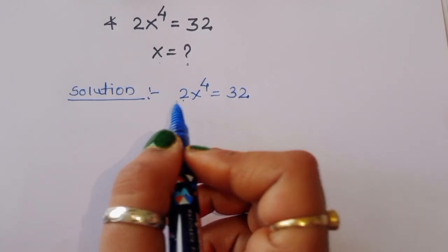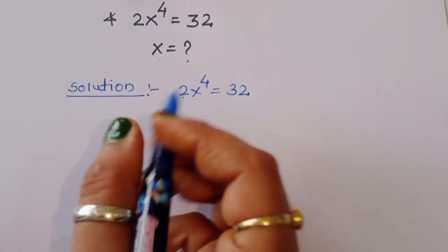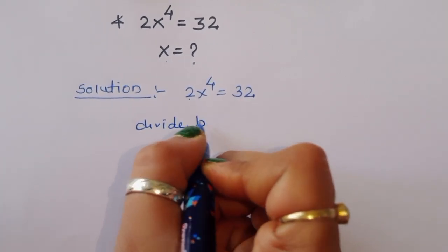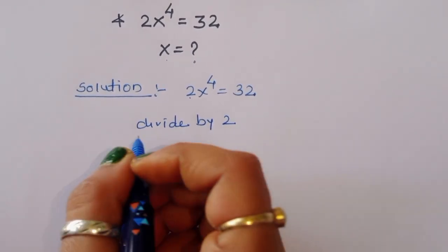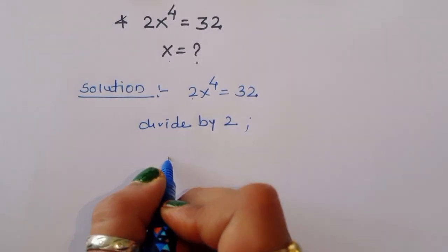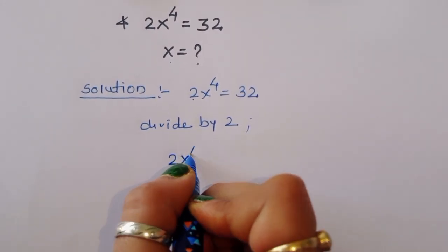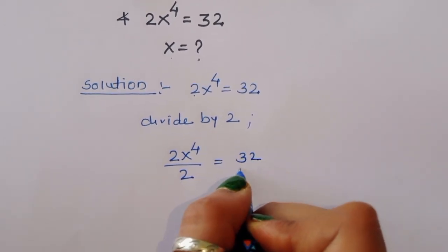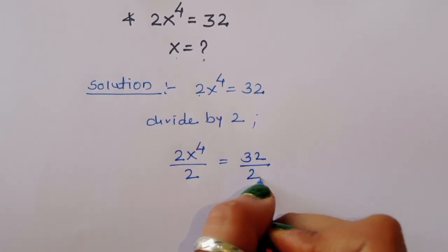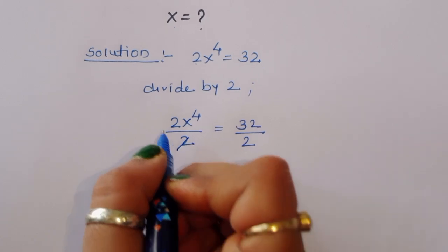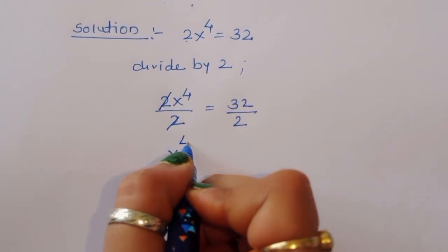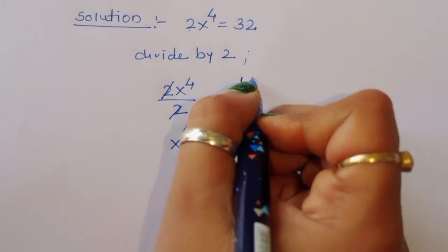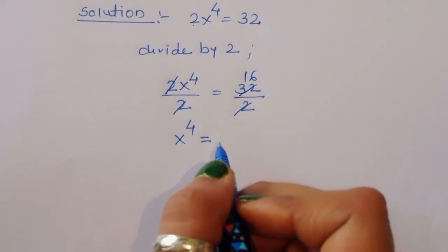We can divide both sides by 2. So 2x⁴ divided by 2 equals 32 divided by 2. The 2 cancels, giving us x⁴ = 16.